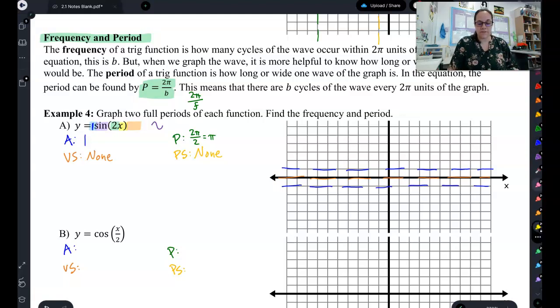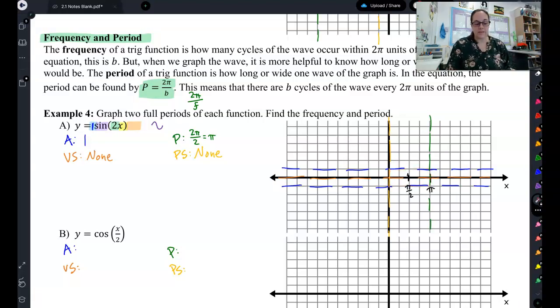Phase shift is none, so that's on the y-axis. And this time, I want my period to be pi long. So I'm going to do pi halves and pi. And now my box is only pi wide instead of 2 pi wide. And I need to fit the whole sine wave in this box.